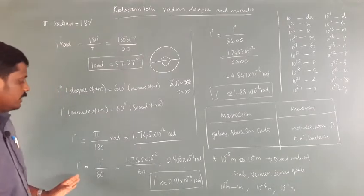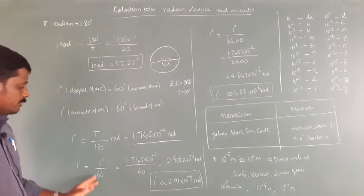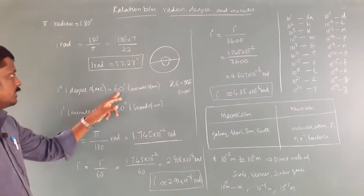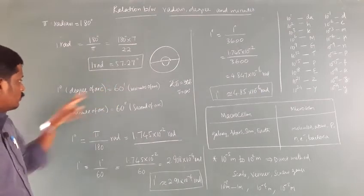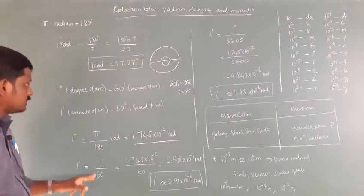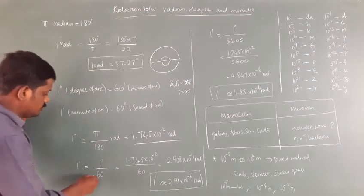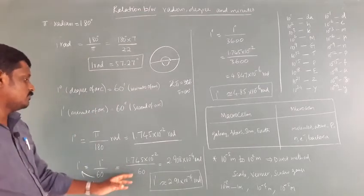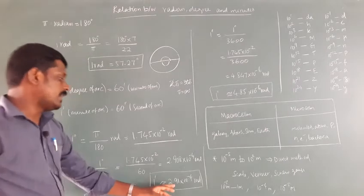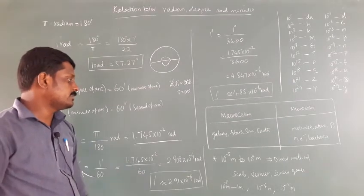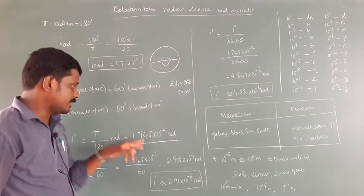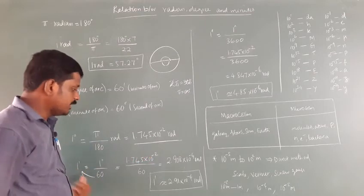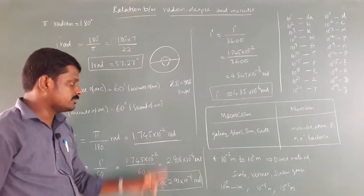1 minute is equal to 1 degree by 60, since 1 degree equals 60 minutes. Substituting the values, we get 2.91 × 10⁻⁴ radians. So comparing: 1 degree equals 10⁻² radians, and 1 minute equals 10⁻⁴ radians.